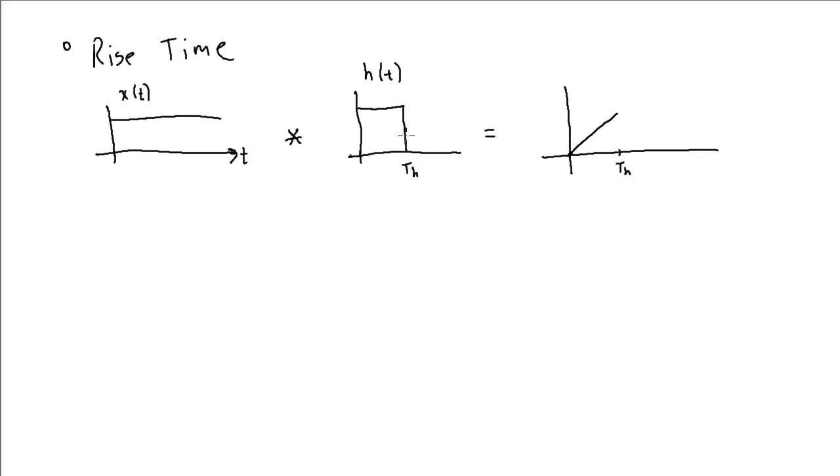for this pulse, as we time reverse it and slide it through. It'll take th seconds for it to be completely overlapped by x of t, and then the output would be constant for all t greater than th.